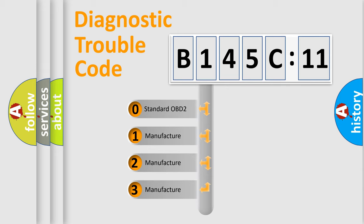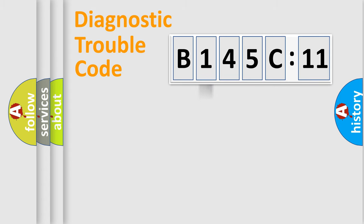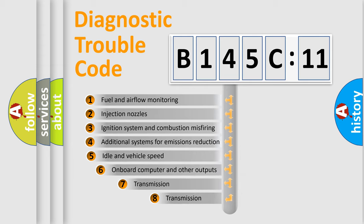If the second character is expressed as zero, it is a standardized error. In the case of numbers 1, 2, 3, it is a manufacturer-specific expression of the car-specific error.